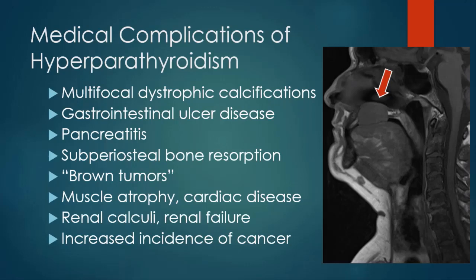The medical complications are widespread — it is not a benign disease. One image shows a patient with a palate lesion that turned out to be a brown tumor in association with hyperparathyroidism, and you can also notice spine disease. These patients have muscle atrophy, cardiac disease, renal calculi and renal failure, and an overall increased incidence of cancer. It has gone from a largely ignored disease to one that is now aggressively treated.